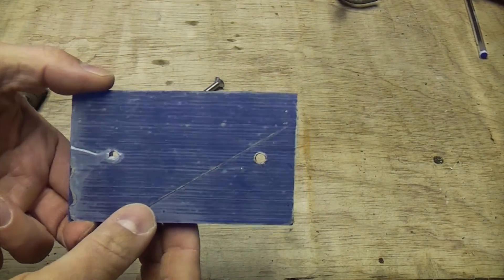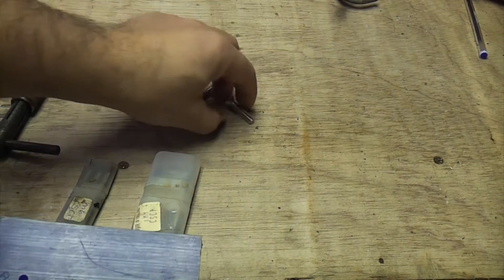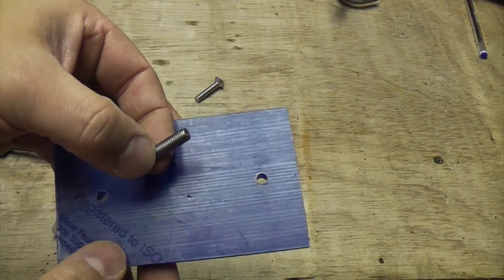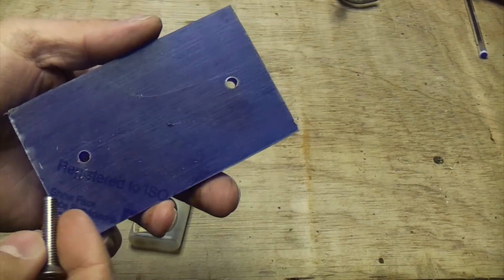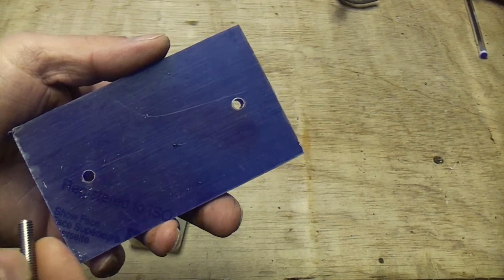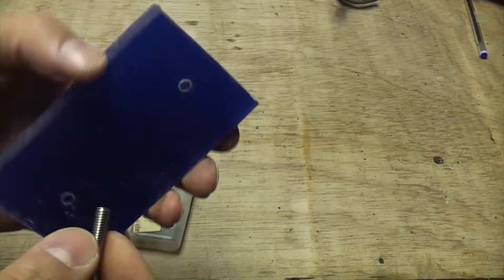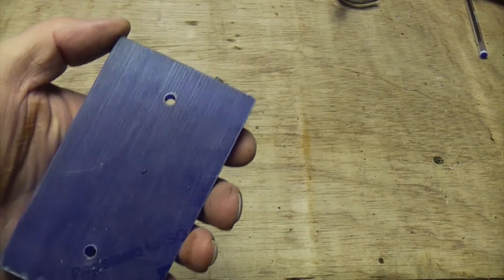If you ever need to tap acrylic, it's quite easy to do. By tapping I mean cutting a thread into it. It's quite handy if you're ever going to make any furniture out of acrylic or perspex or lucite or plexiglass or whatever you want to call it.